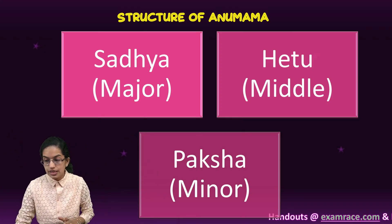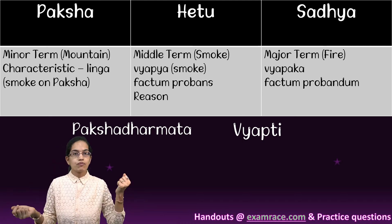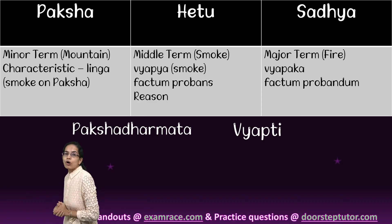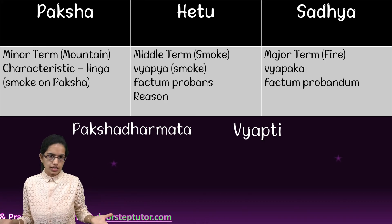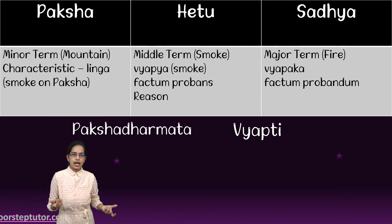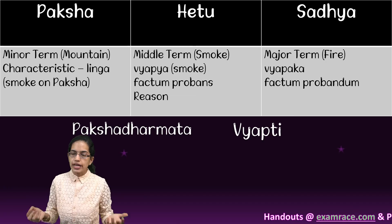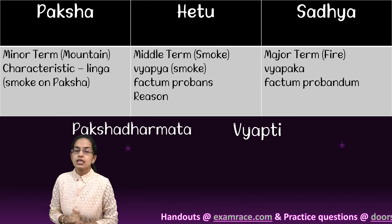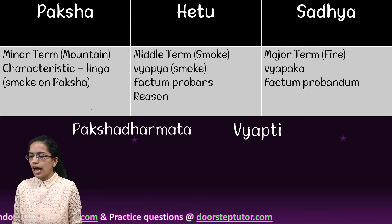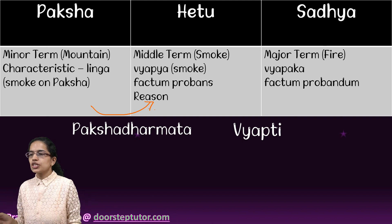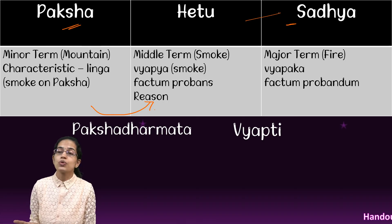Understanding the relationship between these three becomes interesting. We have always taken the example of fire and smoke to understand the concept of anuman. When talking about paksh, hetu and sadhya, the relation between hetu and sadhya — the middle term and the major term, that is smoke and fire — is called vyapti. The relation between the minor term and the hetu is known as paksh dharmata.